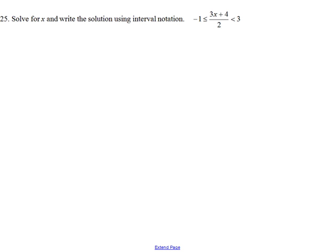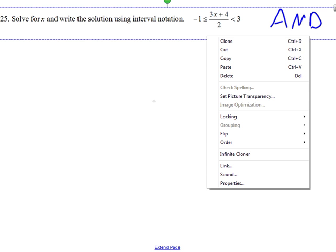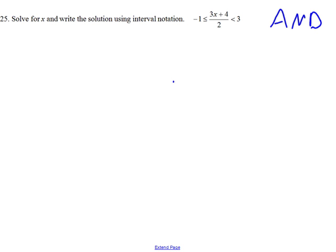This is a compound inequality of the AND type. We want two things, both things to be true. We want this expression in the middle to be greater than or equal to 1 and to be less than 3.